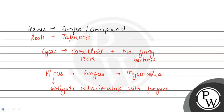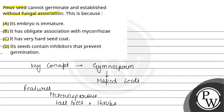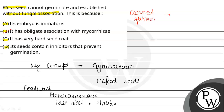Looking at our question options: Option A says the embryo is immature - that is wrong. Option B says it has obligate association with mycorrhiza - that is correct. Option C says it has a very hard seed coat - that is also wrong. Option D says its seeds contain inhibitors - that is also wrong, there are no such inhibitors to prevent germination. So the correct option is B. I hope you understood the concept, thank you.